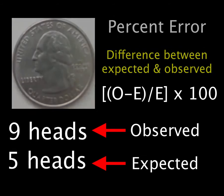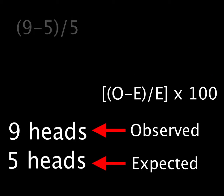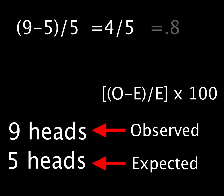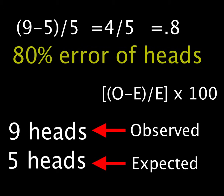So you can do the math: nine minus five is four. Four divided by five is 0.8. And then 0.8 times 100 is 80%. So in this experiment, we got an 80% error, which in most cases would be considered significant.